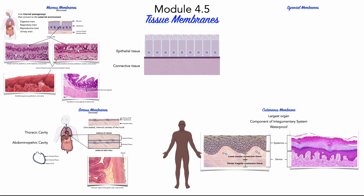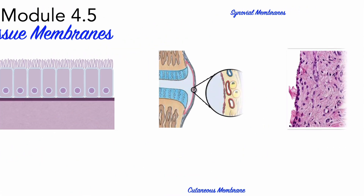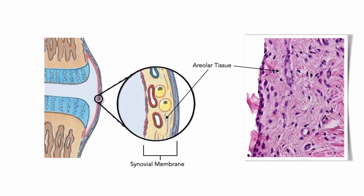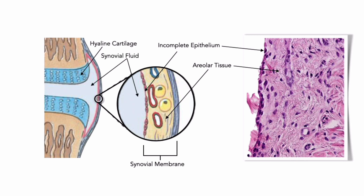Finally, synovial membranes. Skeletal bones contact one another at sites called joints or articulations. Joints that allow free movement are surrounded by a fibrous capsule and contain a joint cavity lined by a synovial membrane. Unlike the other three membranes, the synovial membrane consists primarily of areolar tissue and an incomplete layer of epithelial tissue. In freely movable joints, the bony surfaces do not come into direct contact with one another; instead, the ends of the bones are covered with hyaline cartilage and separated by a viscous synovial fluid produced by fibroblasts in the connective tissue of the synovial membrane. The synovial fluid helps lubricate the joints and permits smooth movement.